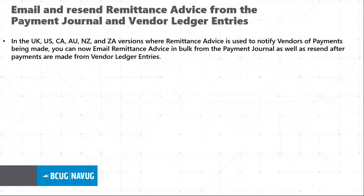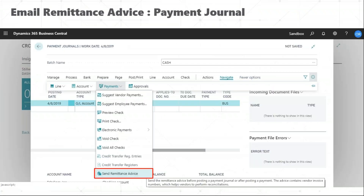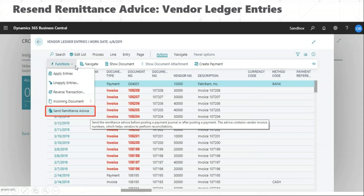This is one cool feature I found in payment journals. After making a payment entry through payment journals, you could send a remittance advice. But after posting that entry, you couldn't get back to the remittance advice and regenerate it. The Business Central April release lets you view and resend the remittance advice directly from the vendor ledger entries. After posting a transaction, you can view it in vendor ledger entries under the Functions action group and click 'Send Remittance Advice.'